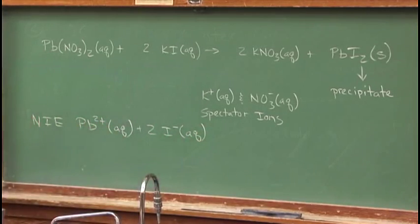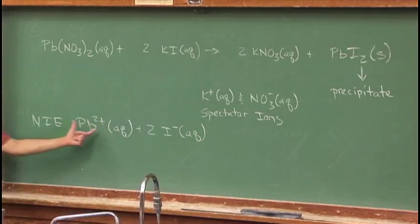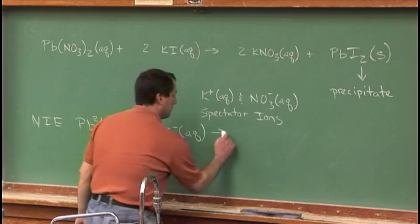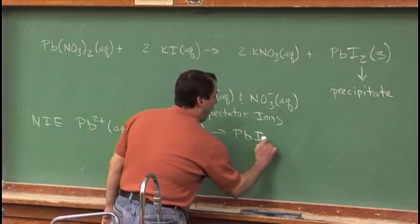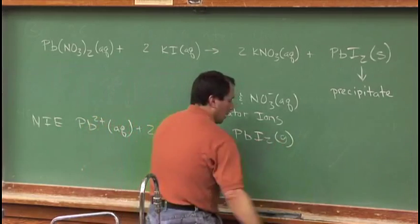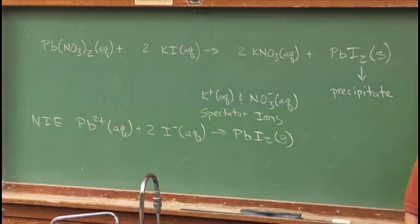The iodides are aqueous, they're floating around in solution. They were put in there with potassium, but now they get together and form the solid PbI2(s), the solid lead iodide.